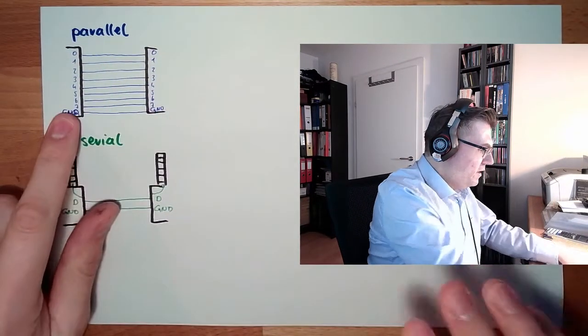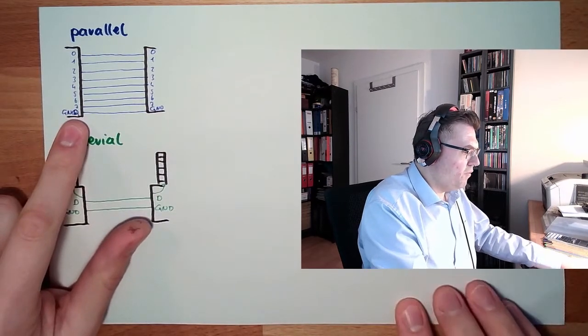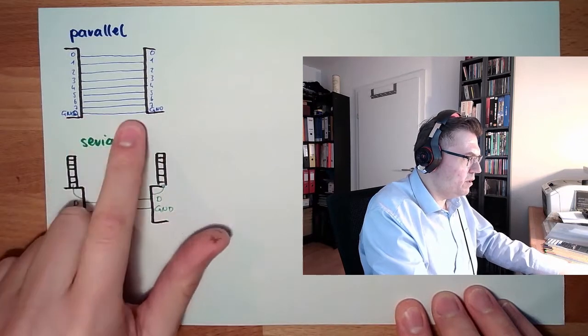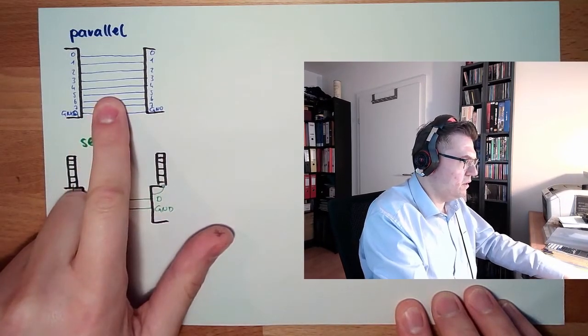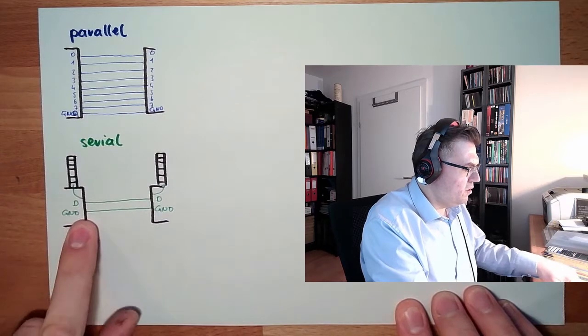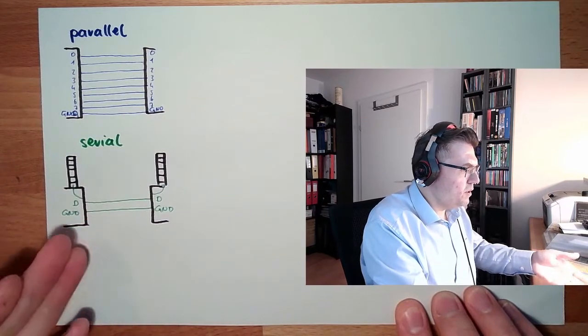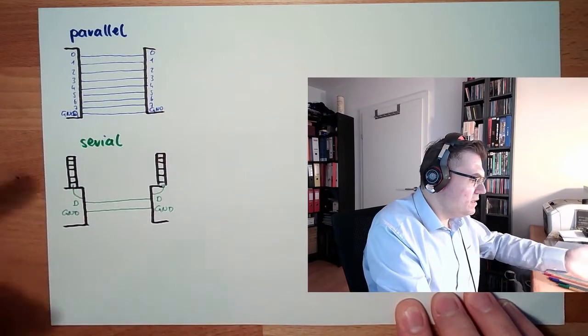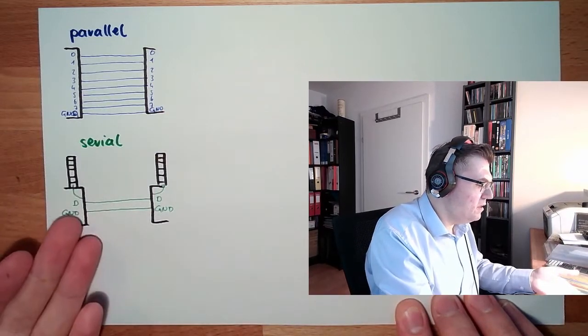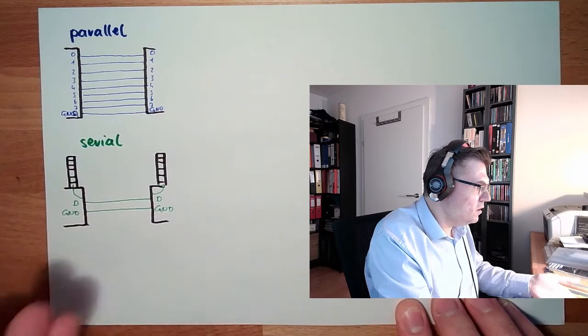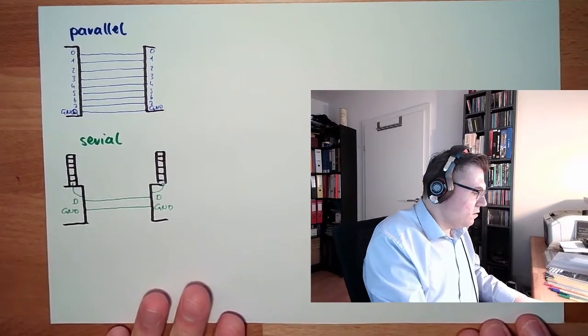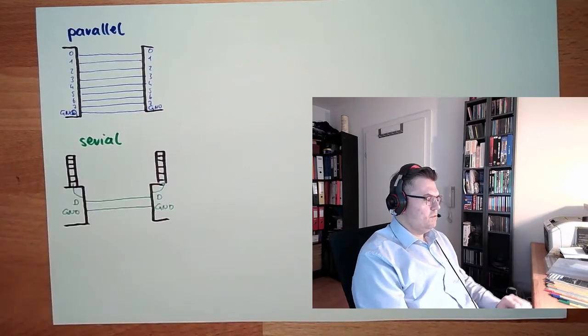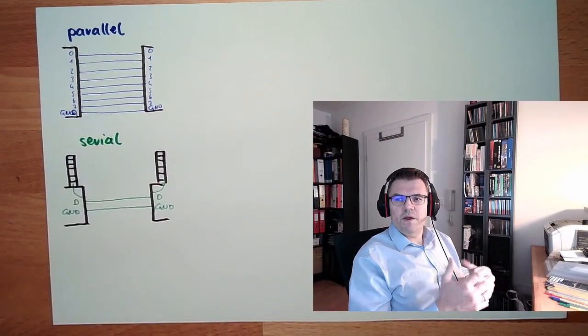These things here we usually use where it really needs to go fast and not that far. For instance, between our CPU and the memory in our computer, parallel bus systems are there. Serial bus systems or serial things we use where we want to talk faster or where we want to talk about longer distances. For instance, Ethernet or USB or something like this. Ethernet we can talk about kilometers even. Serial systems. So it's parallel and serial systems.